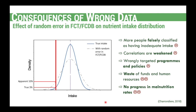The consequences are that more people are falsely classified as having inadequate intake, correlations are weakened, and based on these wrong conclusions we will also have wrongly targeted programs and policies — meaning a waste of funds and human resources and no progress in malnutrition rates. This is why it's extremely important that we know how to select appropriate food composition data.